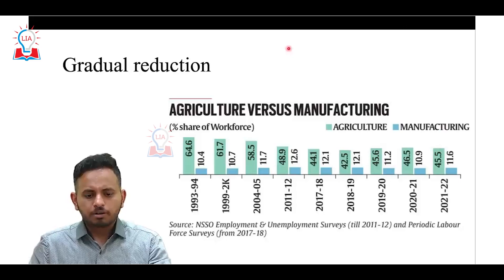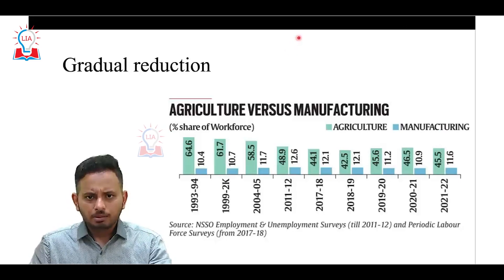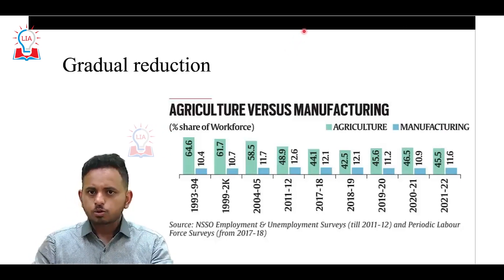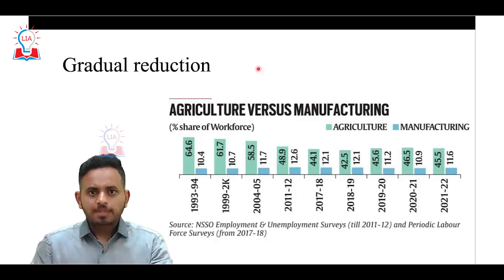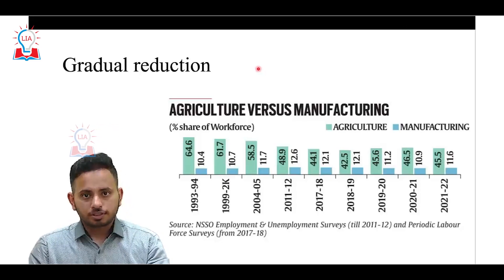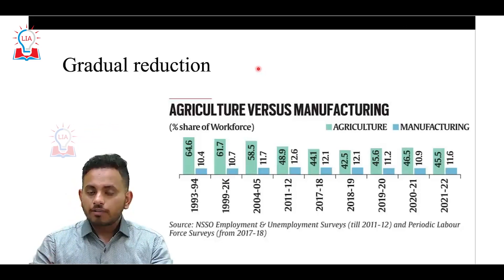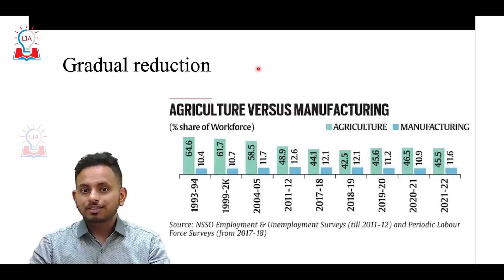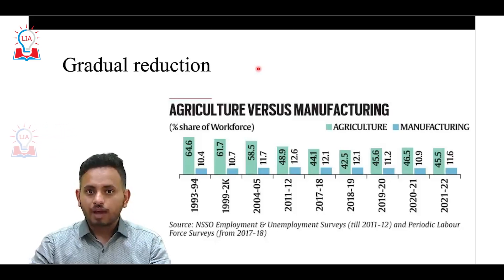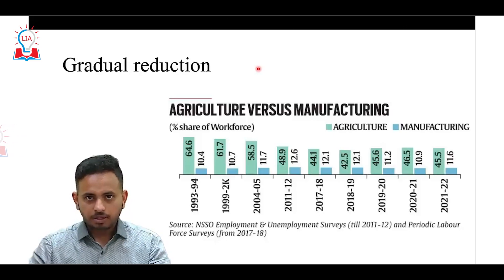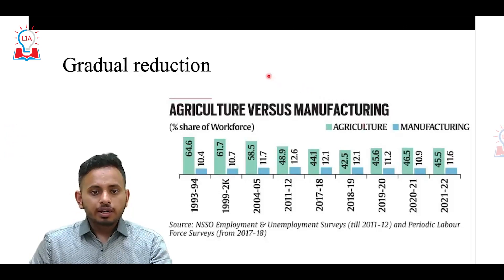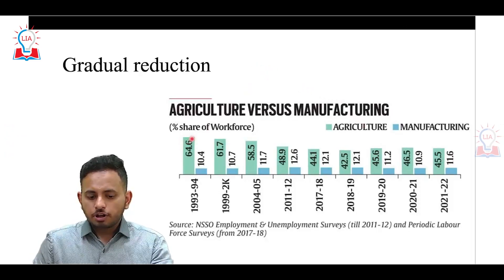For any economy, there are three stages of development: the first stage is agriculture, the second is manufacturing, and the third is services. Every country or economy has to traverse this path from agriculture to manufacturing and then to services.